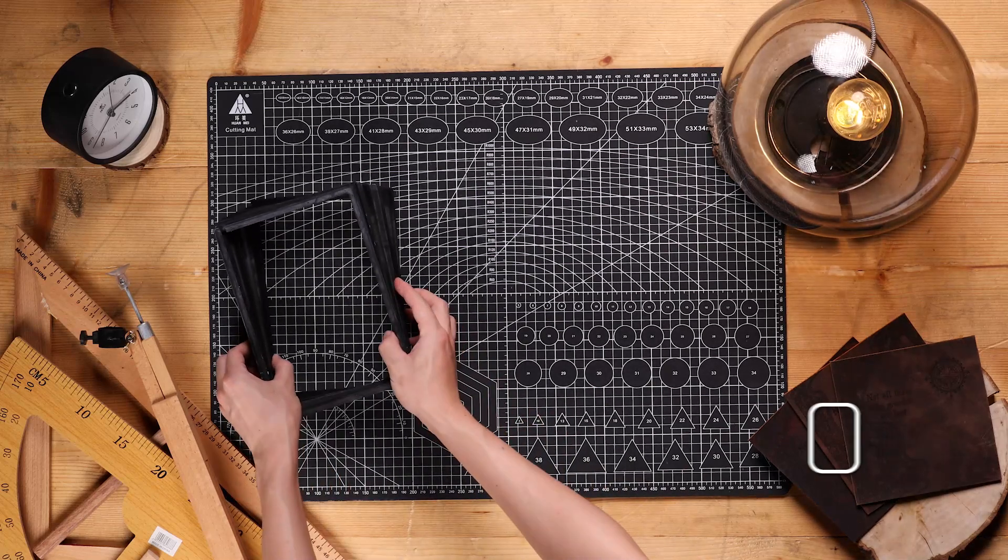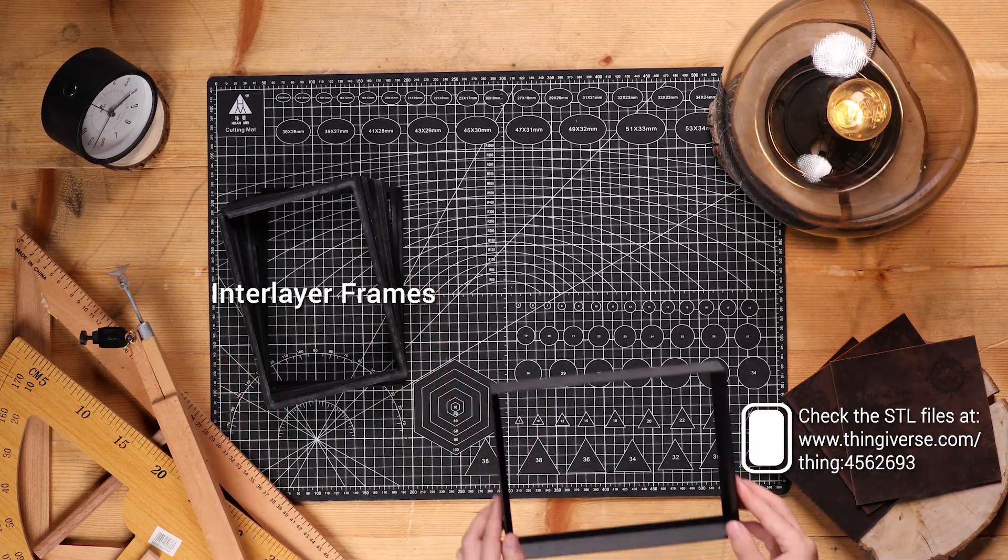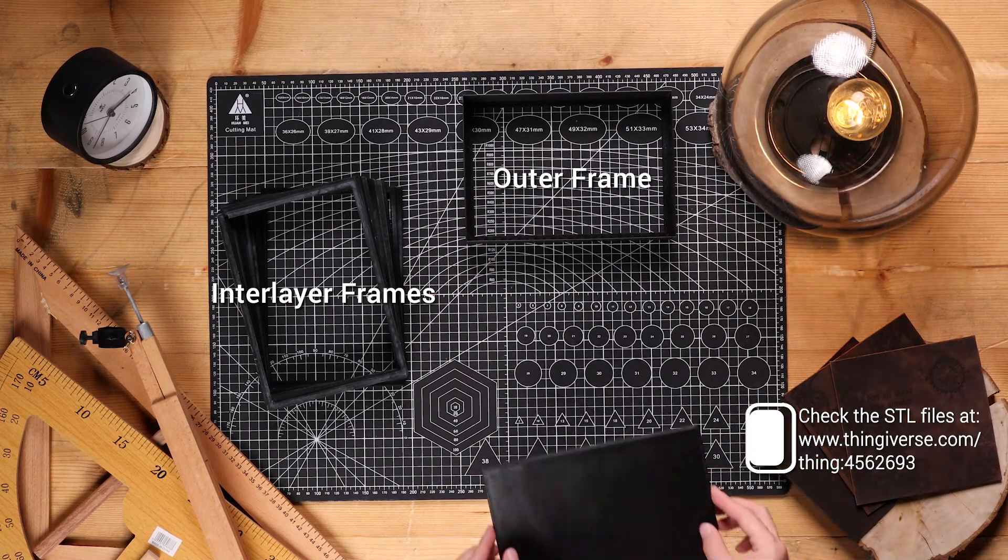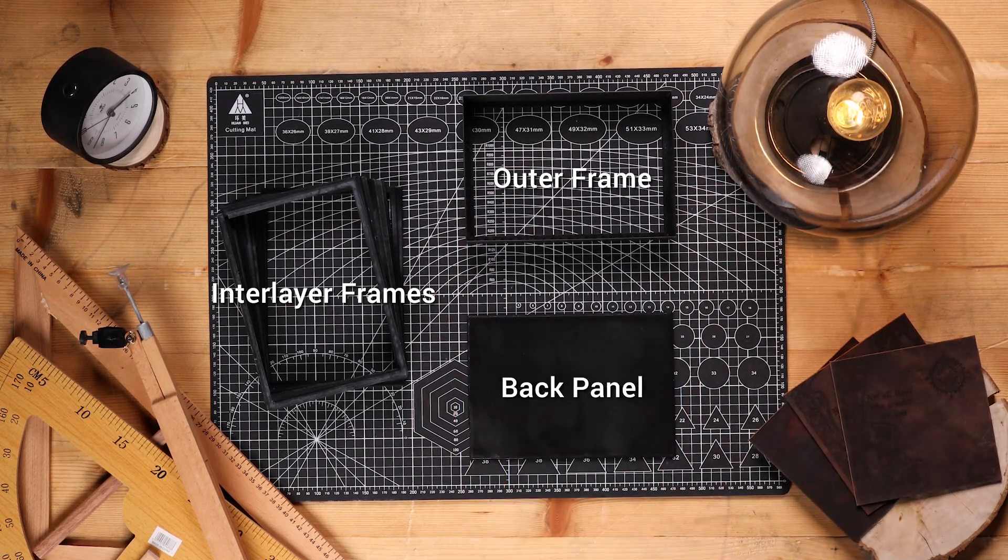The other parts of the lamp, including the outer frame, interlayer frames, and back panel, we can print them out. The STL files are also provided here in the video description.